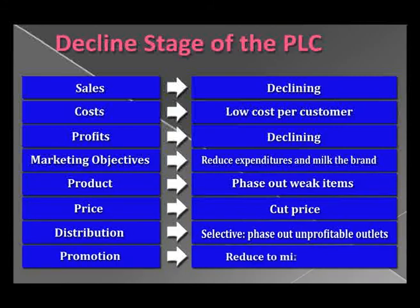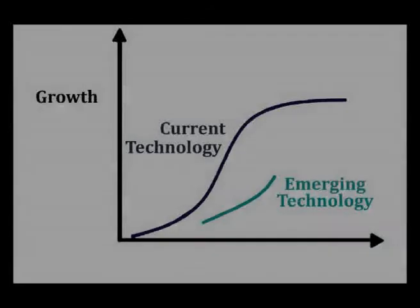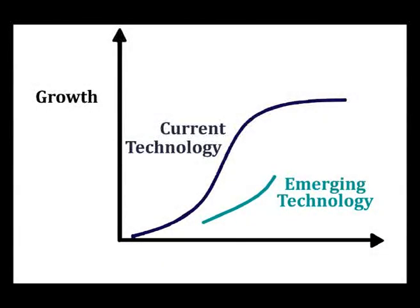To prevent the product going into decline, you can modify the market — look for new consumers by changing the product so it has new users and new customers. The next point to prevent decline is to modify the product — adding new features, variations, or model varieties will change consumer reaction, create more demand, and attract more users.